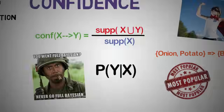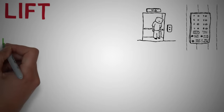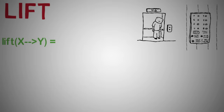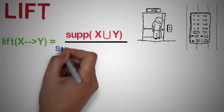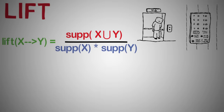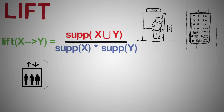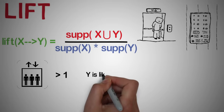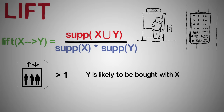To overcome this drawback, there is another measure called lift. The lift of a rule is defined as: lift of X → Y equals the support of X union Y over the support of X multiplied by the support of Y. This signifies the likelihood of item Y being purchased when item X is purchased, while taking into account the popularity of Y. If the value of lift is greater than 1, it means item set Y is likely to be bought with item set X, while a value less than 1 implies item set Y is unlikely to be bought if item set X is bought.